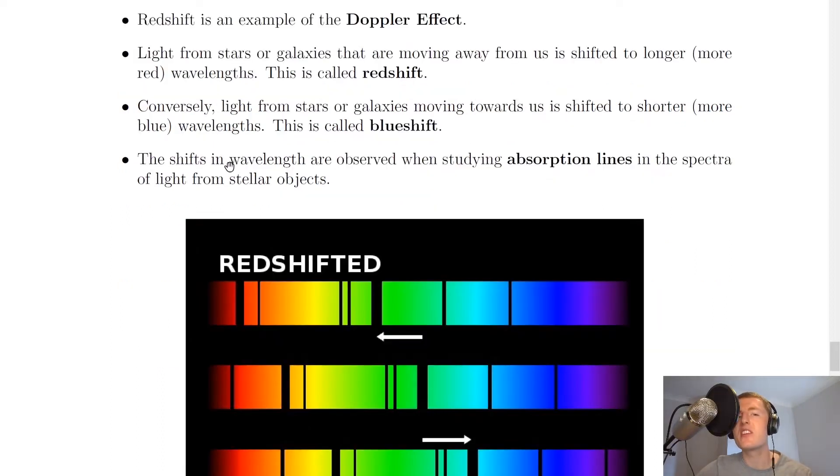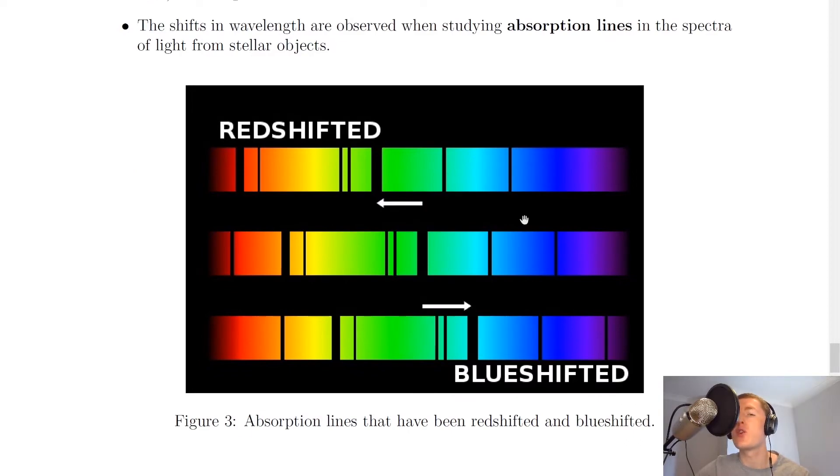The shifts in wavelengths are observed when studying absorption lines in the spectra of light from stellar objects. And here are some spectra showing absorption lines in this picture. Just before we look at this though, I'm going to show you a different picture which should hopefully explain why we get redshift and blueshift.